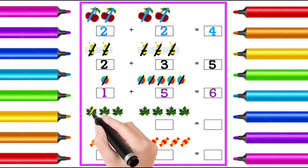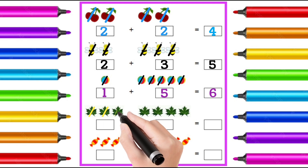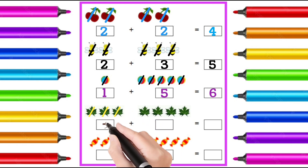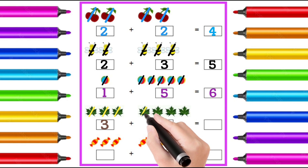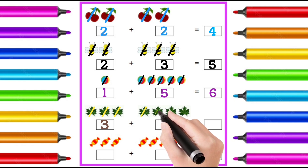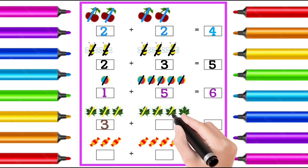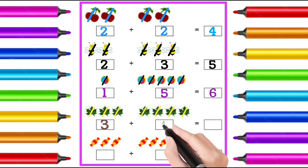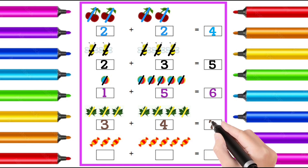1, 2, 3 — it is 3. 1, 2, 3, 4 — it is 4. 3 plus 4 is 7.